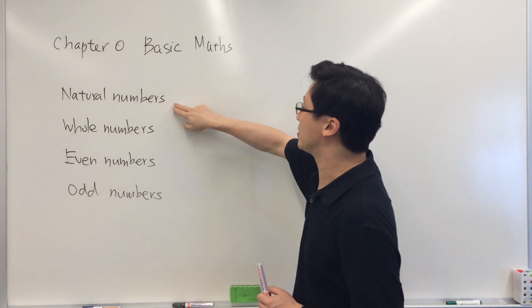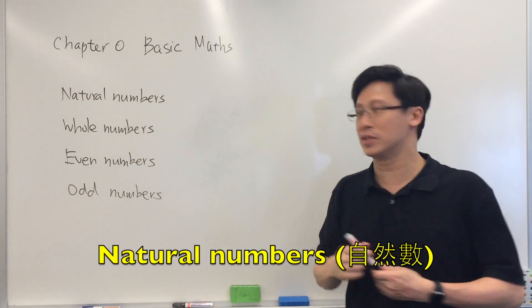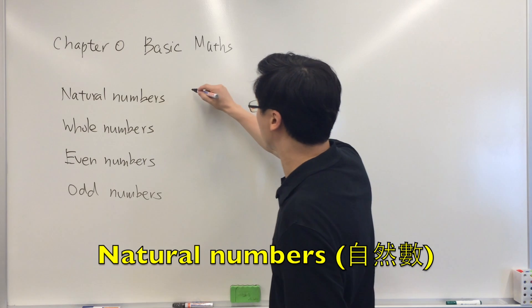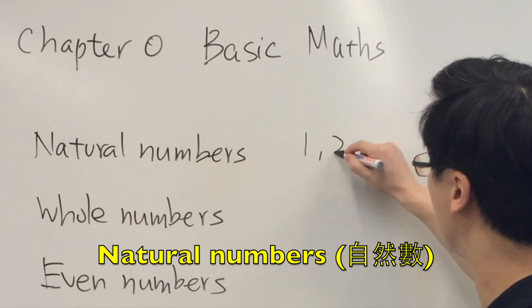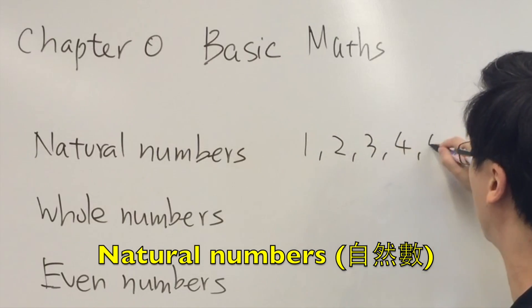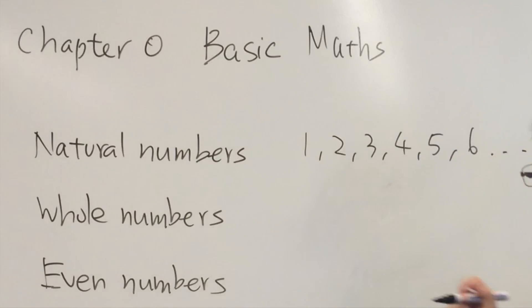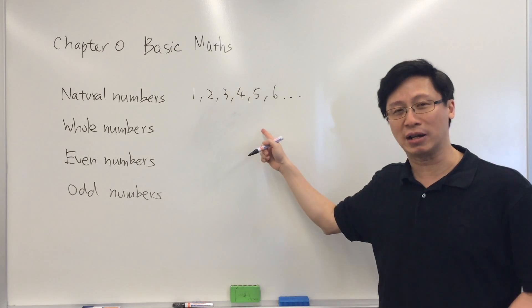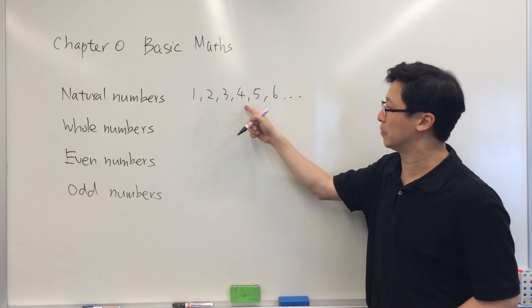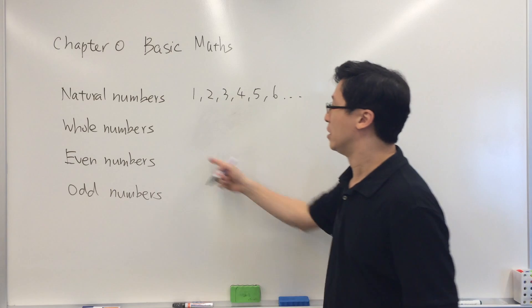For example, we have some numbers called the natural numbers. That is, we have one, two, three, four — these are the numbers which we use for counting. We call them the natural numbers.